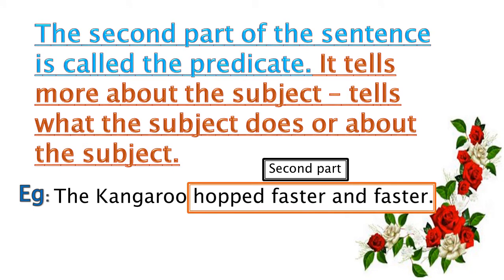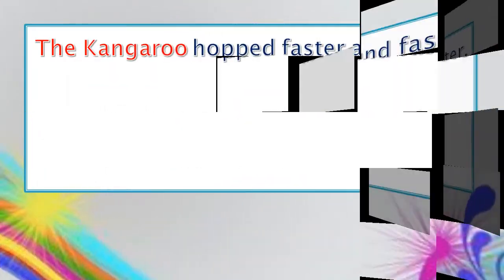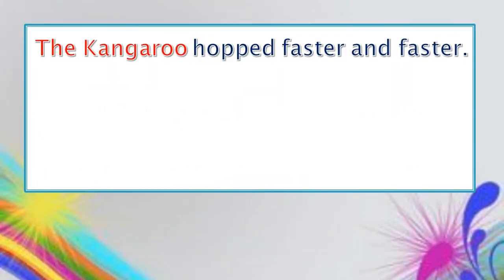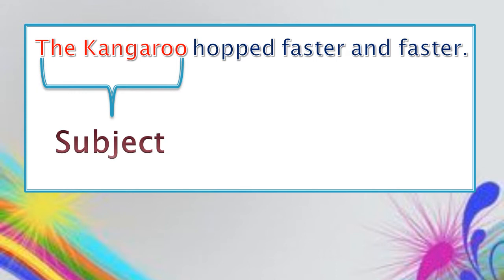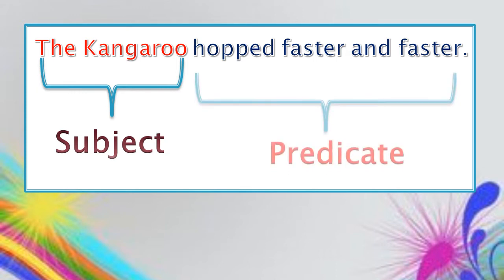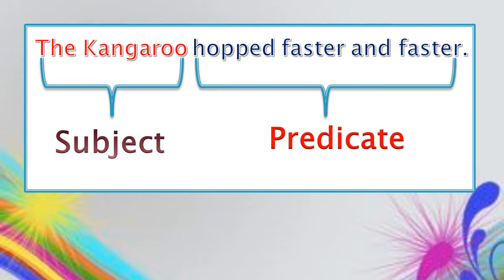This second part is known as the predicate. Let us see the sentence once again: 'The kangaroo hopped faster and faster.' Here, 'the kangaroo' is the first part — the subject part. 'Hopped faster and faster' is the second part — the predicate part.